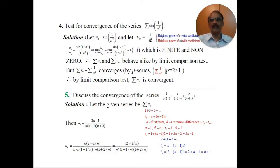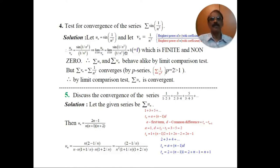We have to find the limit of un by vn. So, un by vn equals sine of 1 by n squared divided by 1 by n squared. Finding the limit as n tends to infinity, limit of un by vn equals limit of sin(1/n²) divided by (1/n²), which equals 1. This is the value L, the limit, which equals 1.